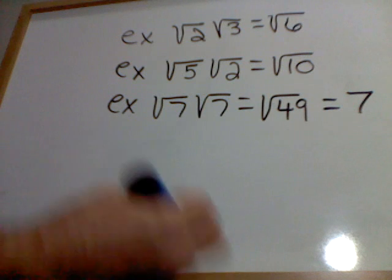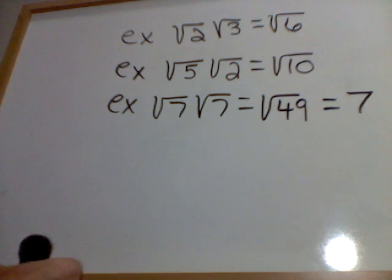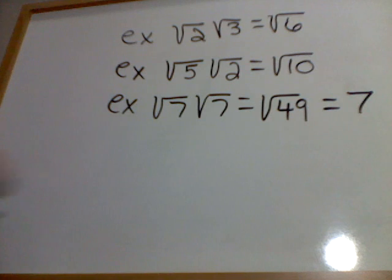Now I'm going to use this product rule in reverse to simplify radicals. When I simplify radicals, I want to remove any factors under that radical that are perfect roots of the index. Observe.